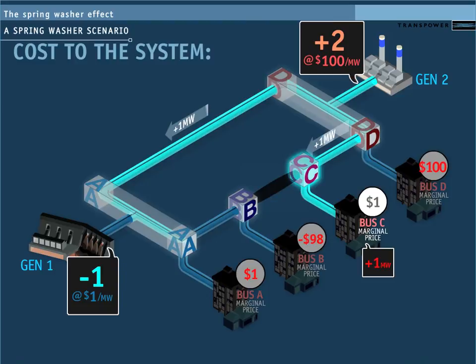So now we can see the cost to the system of supplying the next megawatt to bus C. It would be the cost of producing 2 megawatts at generator 2, $200, minus the 1 megawatt backed off by generator 1, at $1. So we can see that SPD calculates the marginal price at bus C at $199.